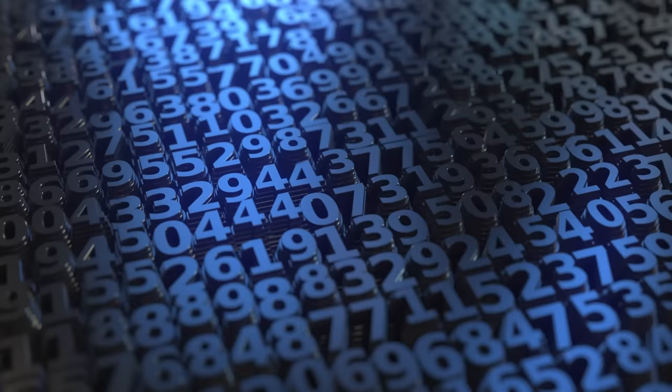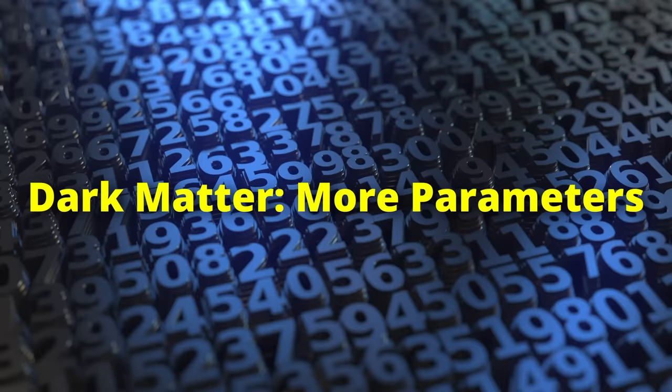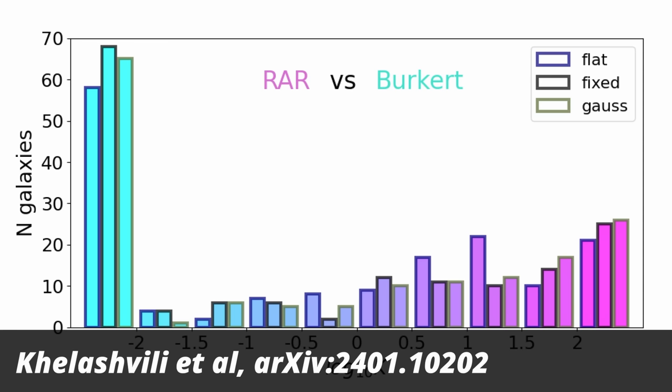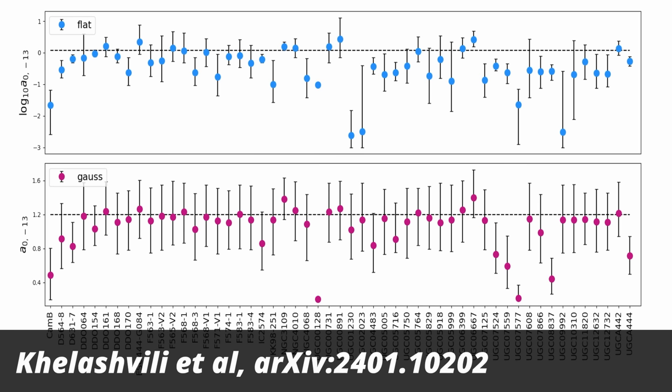The relevant thing to know is that MOND has fewer numbers to adjust for each galaxy than dark matter. For dark matter you have to say how much of the stuff is there and how it's distributed, whereas for MOND you have just this one acceleration scale. So the question is whether the additional parameters in the dark matter model are justified by the improvements in data fitting. The brief answer is yes, as you see in this figure. More galaxies are fit well by dark matter than by MOND, even accounting for the difference in parameters. The reason is that there are some galaxies which just won't fit with the idea that the universal parameter is actually universal.